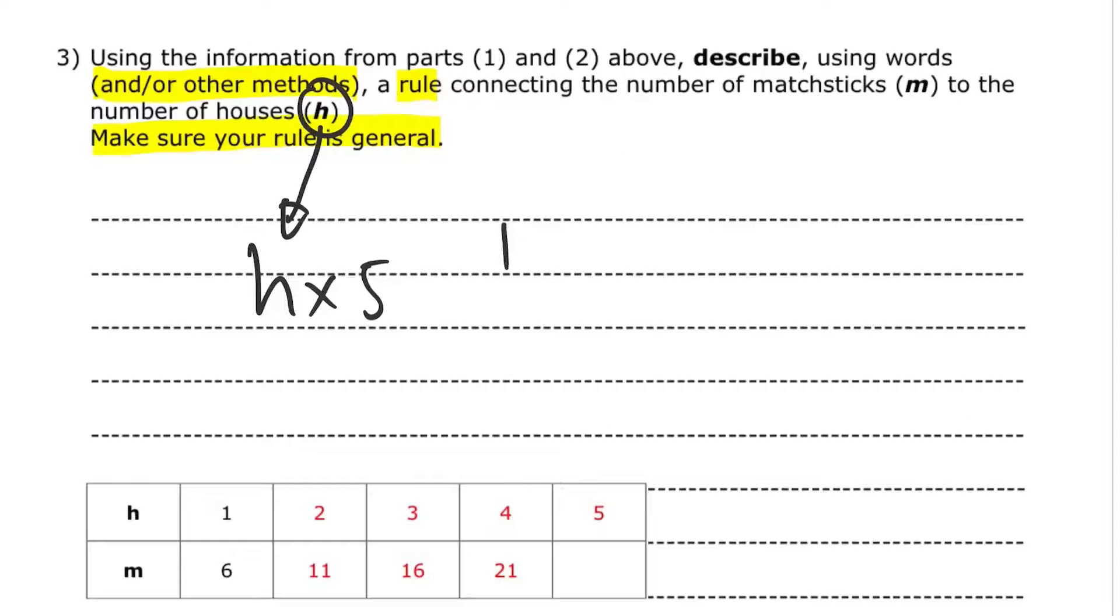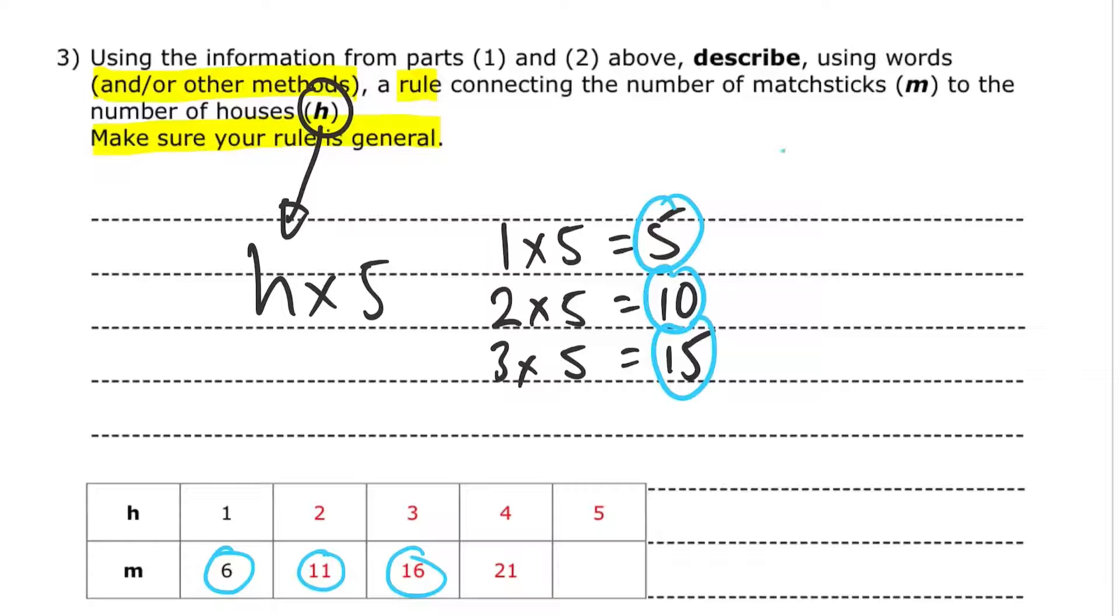So I'm going to do H times 5. So 1 house times 5, that gives me 5. And then 2 houses times 5, that gives me 10. 3 houses times 5 gives me 15. But I notice that if I look at the table, that's not what I have. 1 house times 5 should give me 6. 2 houses give me 11 matchsticks. 3 houses give me 16 matchsticks. So there's definitely something missing between these numbers here. Which means I need to make an adjustment.